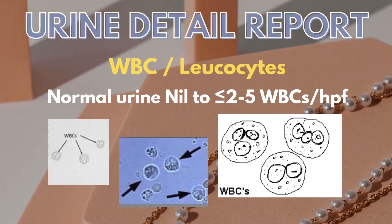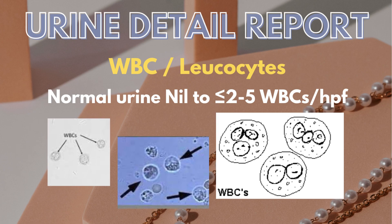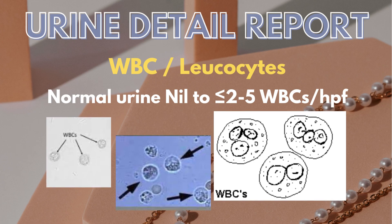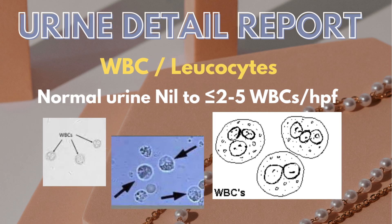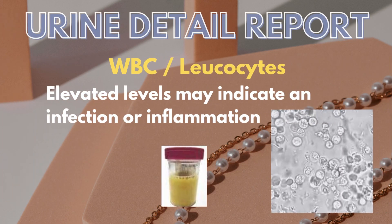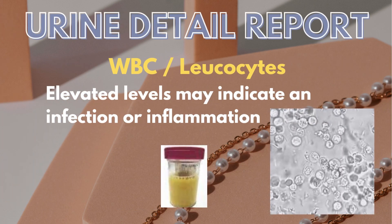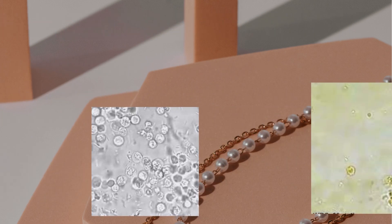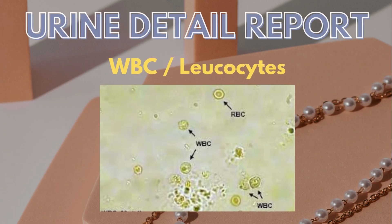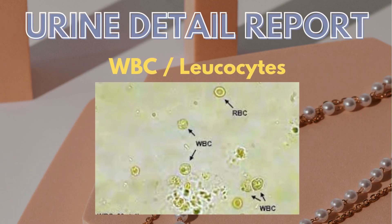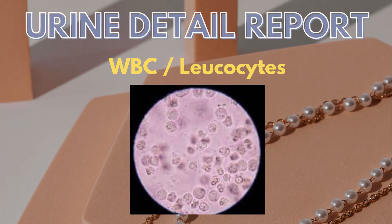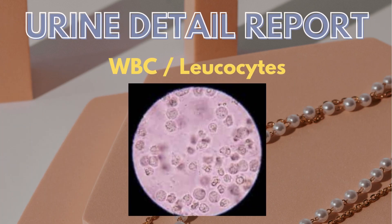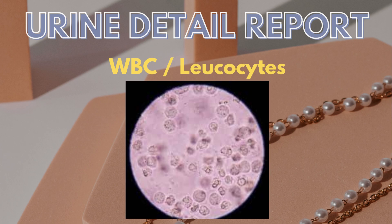Another cellular component is leukocytes or white blood cells, which are normally nil to less than 2 to 5 white cells per high power field. Their elevated levels may indicate an infection or inflammation, for example in conditions like UTI, cystitis — which is bladder infection — prostatitis, acute pyelonephritis, or acute interstitial nephritis.